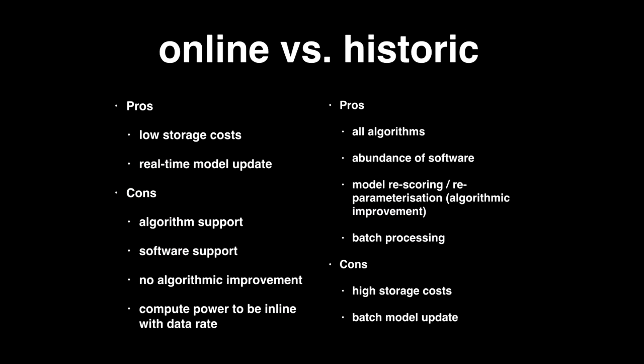Also, compute power has to be in line with the data rate, or you'll lose data. On the other hand, historic batch algorithms are supported by all frameworks — R, pandas, scikit-learn, and so forth. You can improve your model later because you still have all the data, and compute power doesn't need to match the data rate. The downside is high storage cost and that your model isn't always up to date.